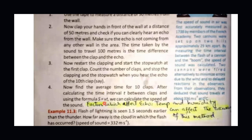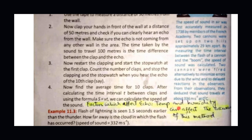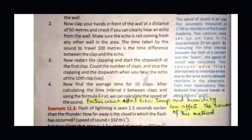Factors that affect the accuracy of this echo method are temperature and humidity. If temperature or humidity conditions differ, different speed of sound results will be obtained. This is our lecture today. I hope you understood it well. Thank you so much.